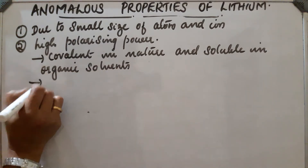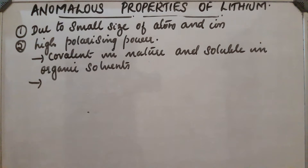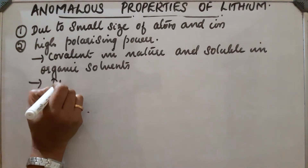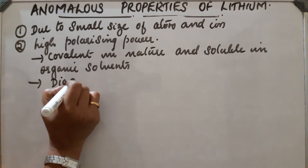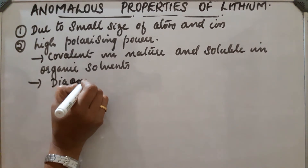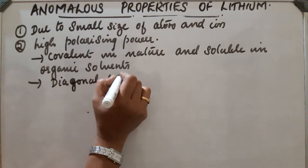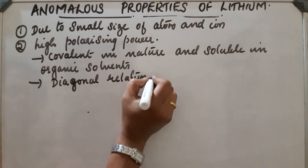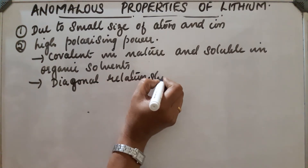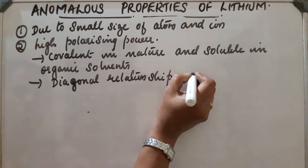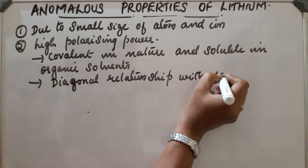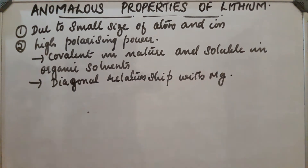Lithium shows a diagonal relationship with magnesium. Due to this diagonal relationship, there are similarities between lithium and magnesium. Now let us discuss the differences between lithium and other alkali metals.